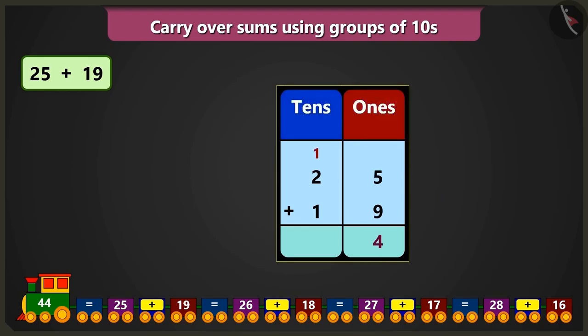Now, in the box of tens, the carryover number 1, when added to 2, will be 3 and adding 3 and 1 will make 4. Yes. So, 4 tens and 4 ones will be the number 44.